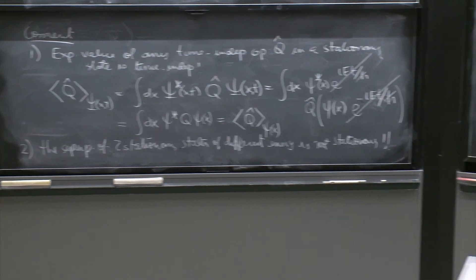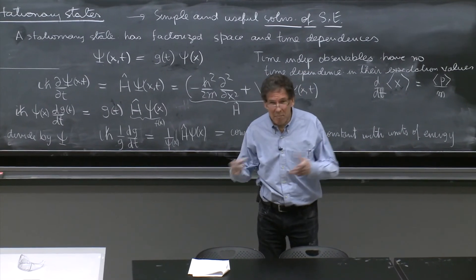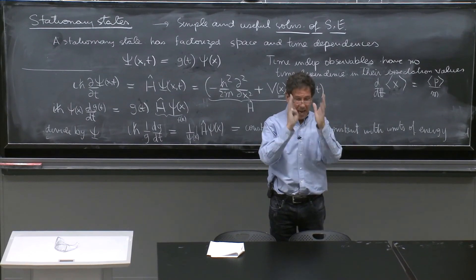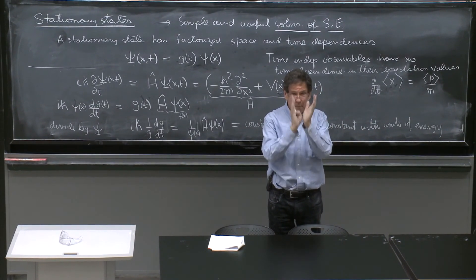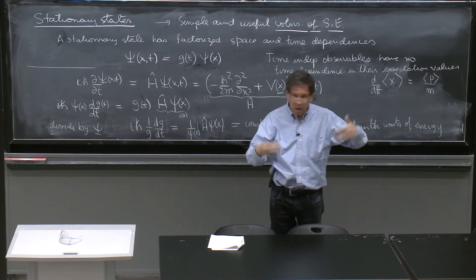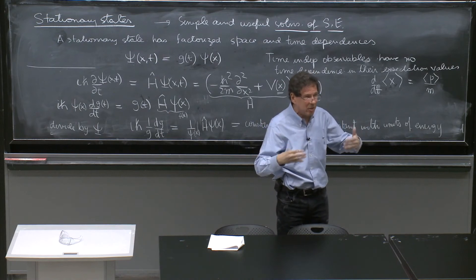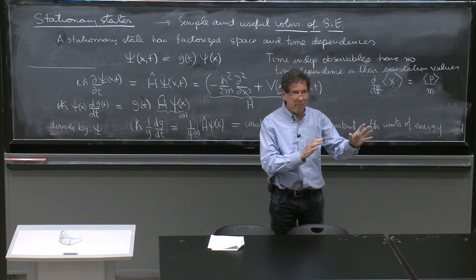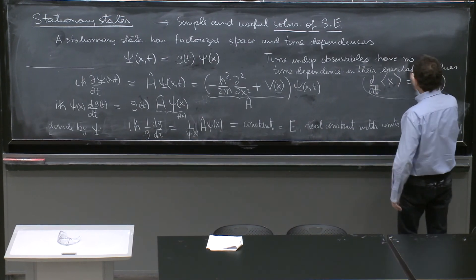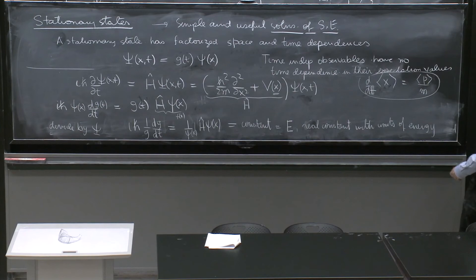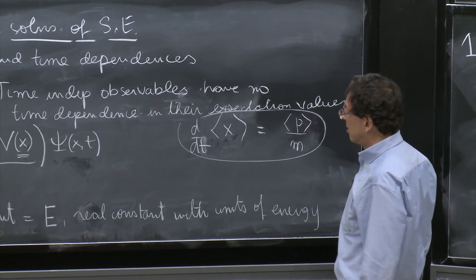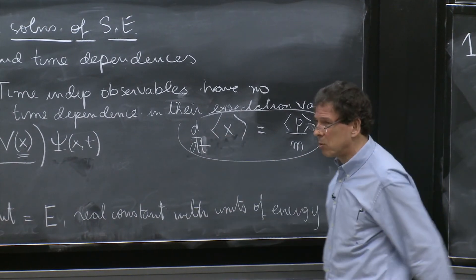And it's more than just to say it's not stationary. What it means is that if you take the expectation value of a time-independent operator, it may have time dependence because you're not anymore guaranteed by the stationary state that the expectation value has no time dependence. That's how, eventually, these things have time dependence, because these things are not evaluated on stationary states. On stationary states, the states would have no time dependence.